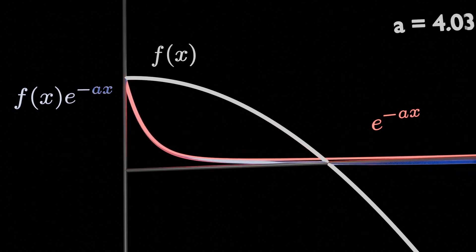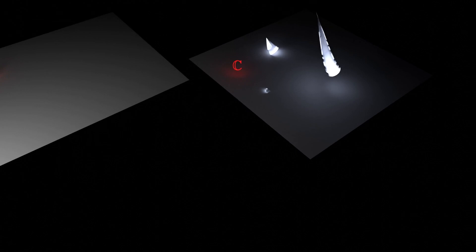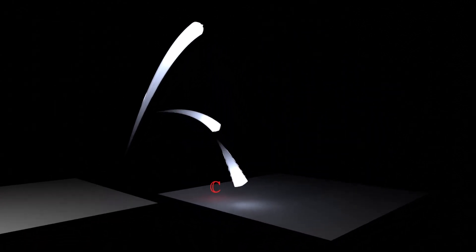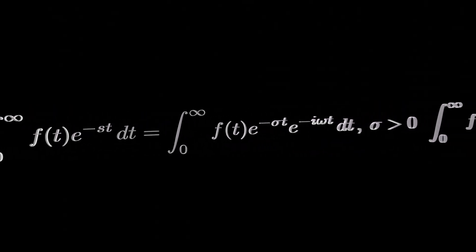And so maybe you can start to feel how, if you know this data across a continuous range of these exponential decays, then maybe somehow you could unravel it and figure out what the actual function is from this encoded data. But that's just the real part of the exponential. If you focus on just the complex part and similar to a Fourier transform,